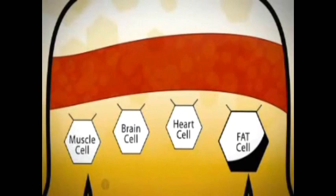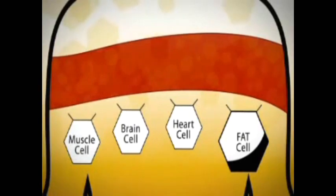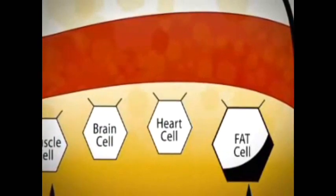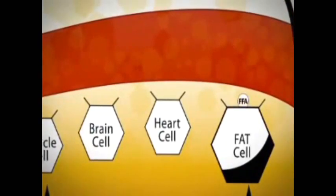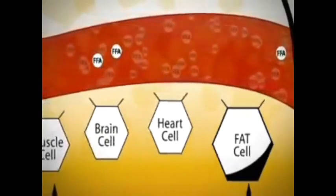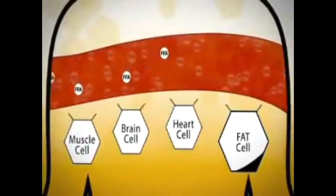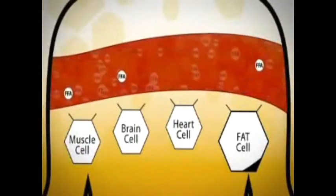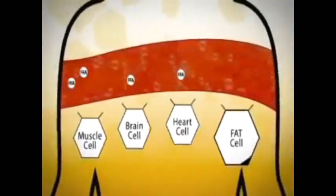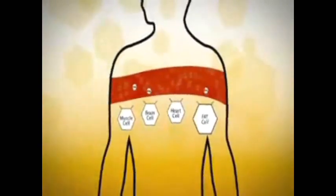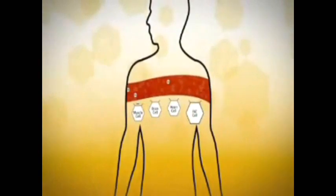When our body needs more energy, or glucose, and we don't have any food handy, it turns to the fat cells and the free fatty acids stored inside them. The free fatty acids leave our fat cells and go right back into the bloodstream to feed all our other cells. They don't need insulin to open the cell doors. That's why they're referred to as free fatty acids. This natural process of storing fat when you have too much glucose and burning fat when you don't have enough glucose is how your body was designed to work.